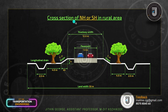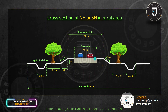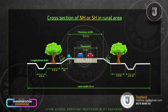Next, cross-section of national highway or state highway in rural area. The cross-section of national highway represents this figure. National highway or state highway are two-lane roads. A two-lane road is about 7 meters; one lane is about 3.5 meters. The pavement width is about 7 meters, and the roadway is about 12 meters.